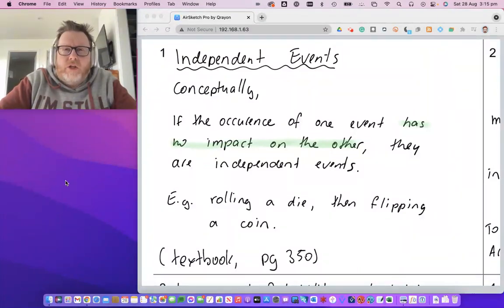They say that two events are independent if the occurrence of one event has no impact on the other, and vice versa. We call them independent events.